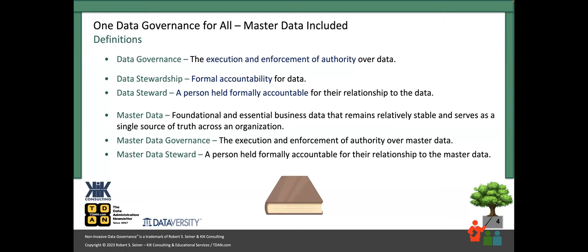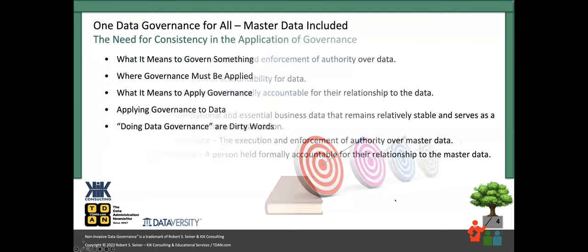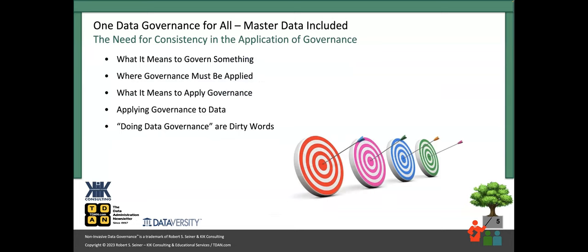Now let's add in master data. Here's a definition I use — it's pretty generic, probably similar to your own master data definition. What's the definition of master data governance? It's just going to be my definition of data governance with the words 'master data' at the end — the execution and enforcement of authority, because your data will not become master data unless somebody is executing and enforcing some level of authority over how that data is being defined, produced, and used in your organization. And what is a master data steward? It's a person being held formally accountable for their relationship to the master data — defining it, producing it, using it. We need to know who those people are and help them build into their job the accountability of how they're governing the definition, production, and usage of the data.